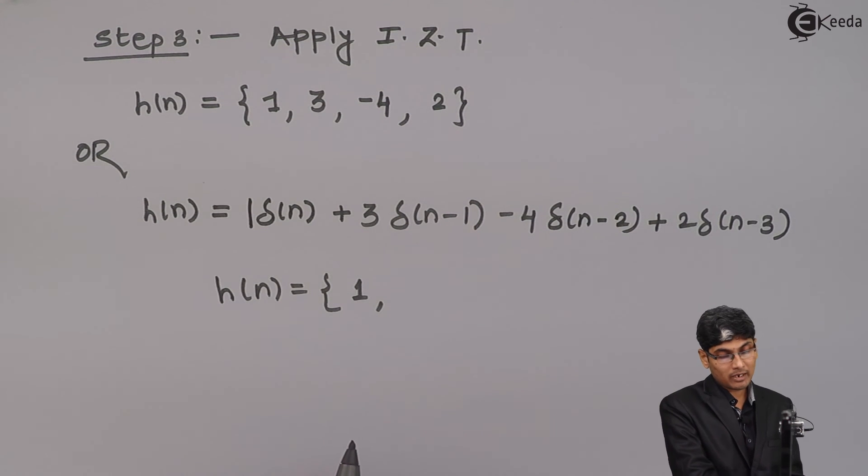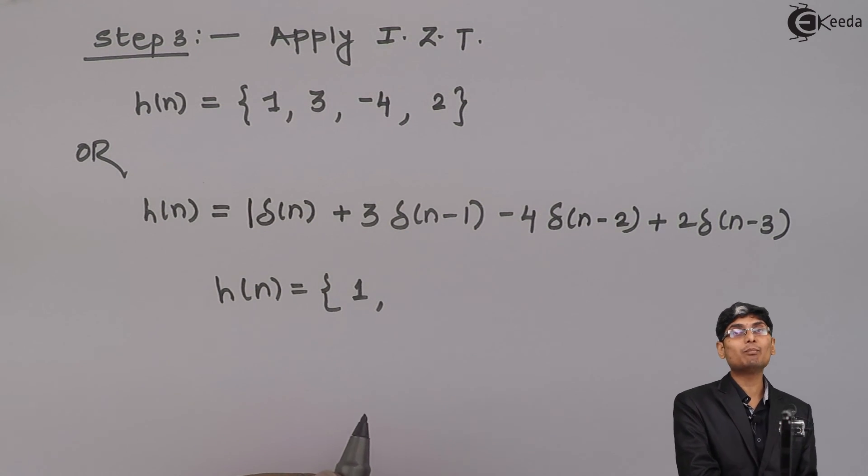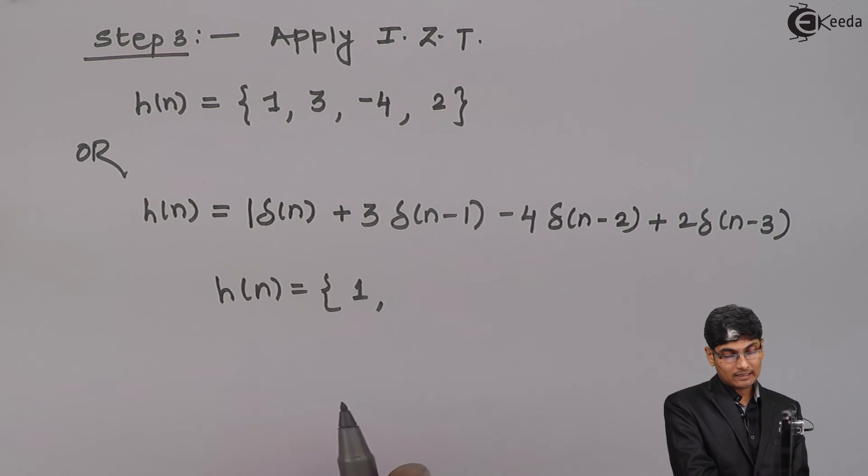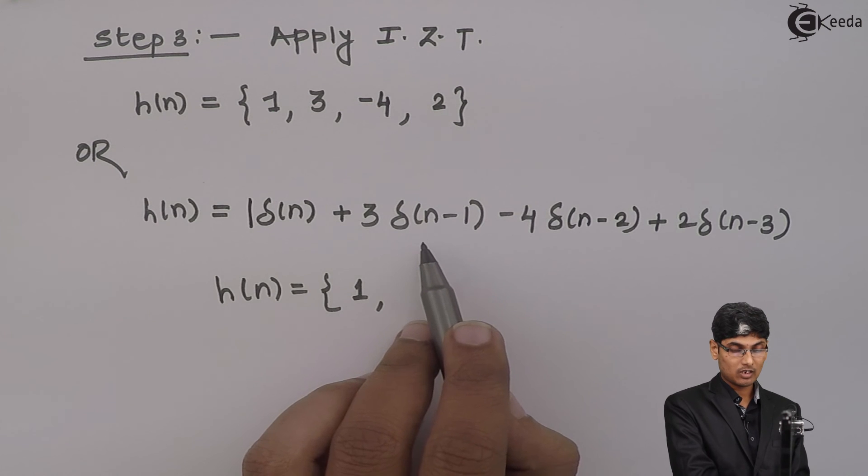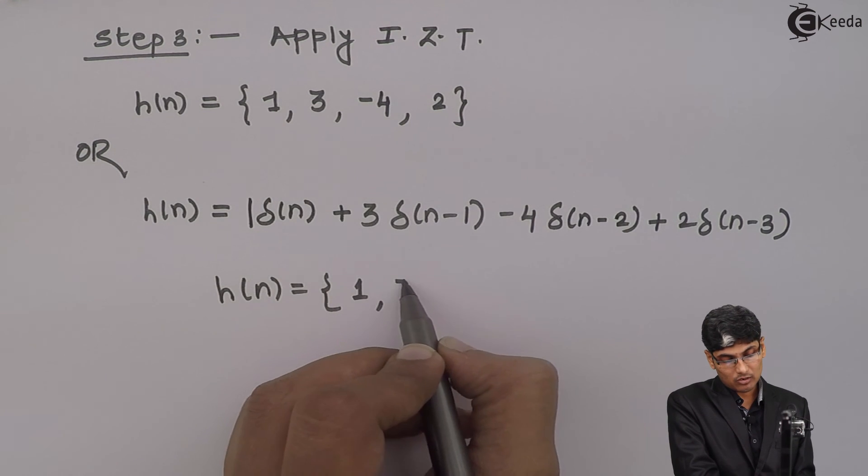Then I have delta n minus 1. This is shifted impulse by 1. That means this signal will be 1 at n is equal to 1 and 0 everywhere. And what is the amplitude? 3. So, I write 3.